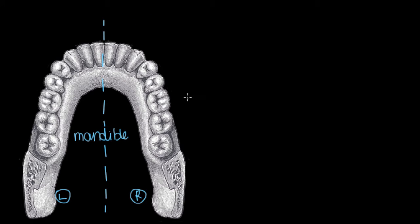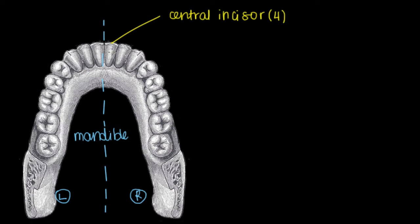Every tooth has a specific function, or every set of teeth does. The first type is called the central incisor. We have four central incisors in total — one here, a second one here, and two others in your upper jaw. The central incisor is mainly used for cutting food. The way to remember that is the word 'incisor' — just like in surgery we say we're about to make an incision, meaning a cut. So central incisors make incisions.